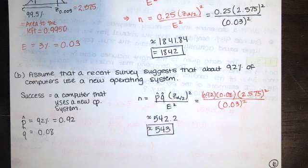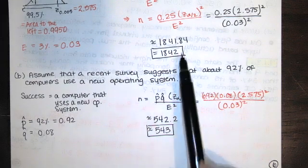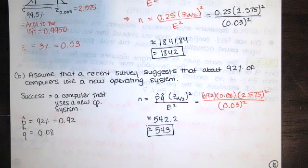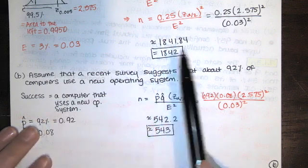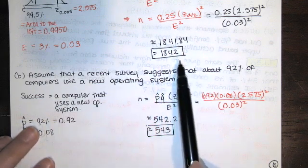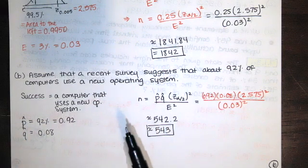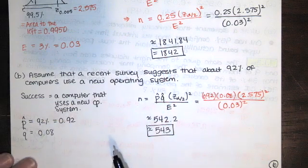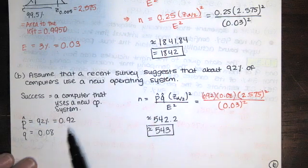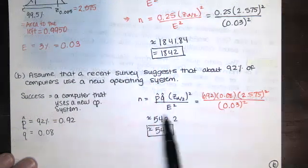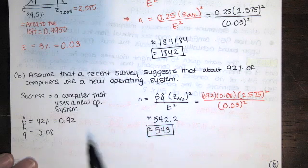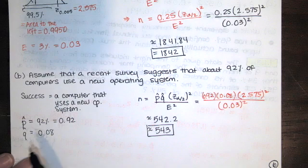So that's pretty nice. In the absence of information, we had to survey 1,842 computer users to find out who was using a new operating system. Or alternatively, we had to look at 1,842 computers to determine how many were using a new operating system. This says if we have this background information, we don't have to look for a sample size nearly as large. We only need 543 computers for our survey if we know that this is true. And that's very nice.